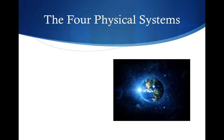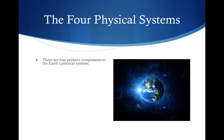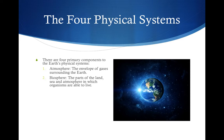The Earth has four identifiable physical systems. These are the four primary components to the Earth's physical systems. The first is the atmosphere, which is the envelope of gases surrounding the Earth. There's the biosphere, which is the parts of the land, sea, and atmosphere in which organisms are able to live.